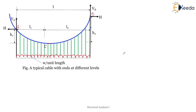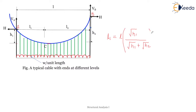This is the typical diagram for a cable with ends at different levels. For the formulation, we need to calculate span lengths l1 and l2. The formula is: l1 = L × √h1 / (√h1 + √h2), and l2 = L × √h2 / (√h1 + √h2).